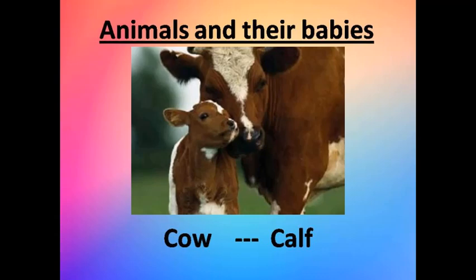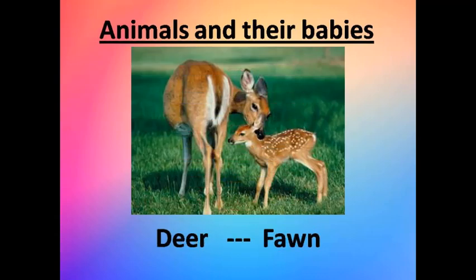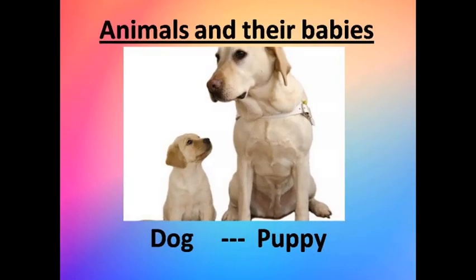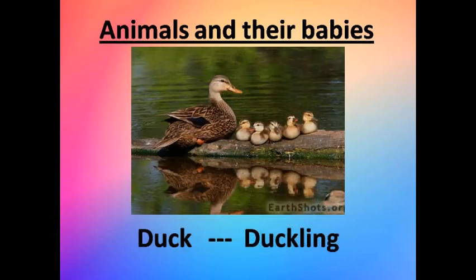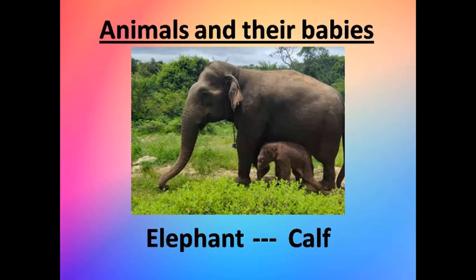Caterpillar — here right. A Calf, C-A-L-F. Deer — deer's baby, a beautiful thing, is called Fawn, F-A-W-N. Next is Dog — you already know dog's baby vocabulary: Puppy, yes Puppy! Duck — duck's baby is called Duckling.